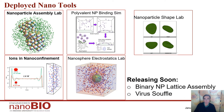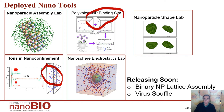Here are the five tools which, as of January 2020, have been deployed by this nano group: the assembly lab, the electrostatic lab, the shape lab, the simulation of ions running around in nano confinement, and the binding simulator, which tells you how many receptors are bound to interact with the surface. Coming up are the binary nanoparticle lattice and the virus soufflé, which are being thought about and will probably be the next two to be delivered.